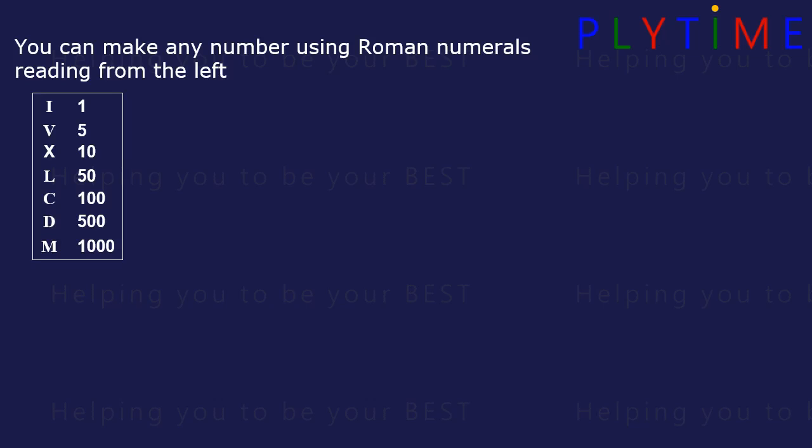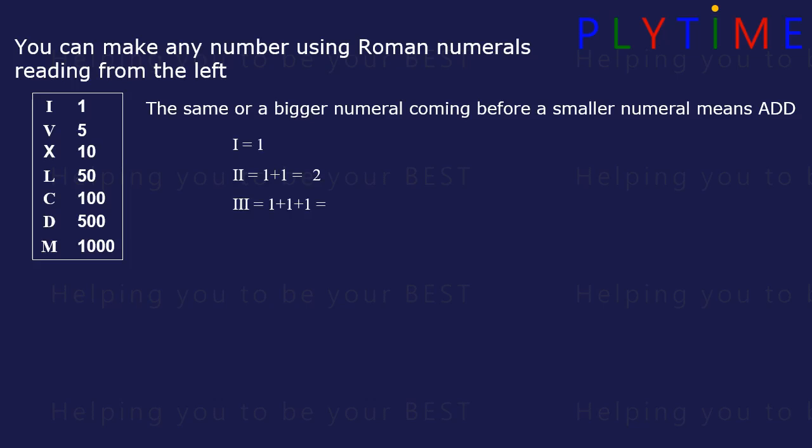You can make any number using Roman numerals reading from the left. The same or a bigger numeral coming before a smaller numeral means add. I is 1, so II is 1 plus 1, which equals 2. III is 1 plus 1 plus 1, which equals 3.